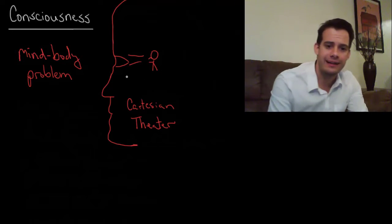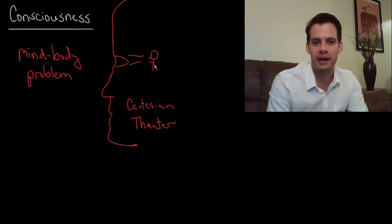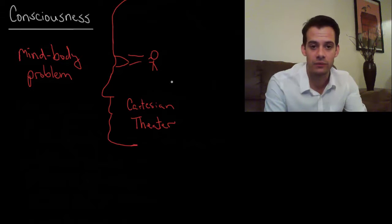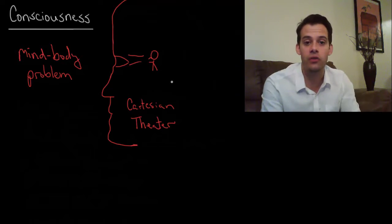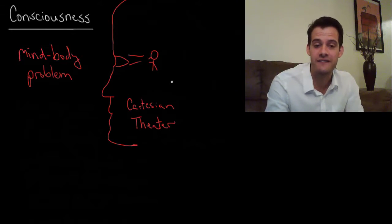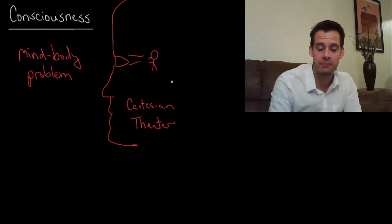And the problem of course is that this isn't really how it works because what's inside the mind of this little person inside our head? And then what's inside that mind and what's inside that mind? You could do this indefinitely. It's sort of turtles all the way down. So the Cartesian theater is not really how things work, but it's hard to come up with a substitute. It really does feel that way sometimes. So how is it that it feels that way? How is that arising from physical processes in our body? So that's the mind-body problem.